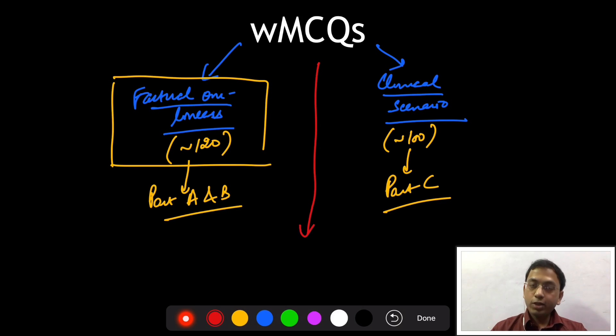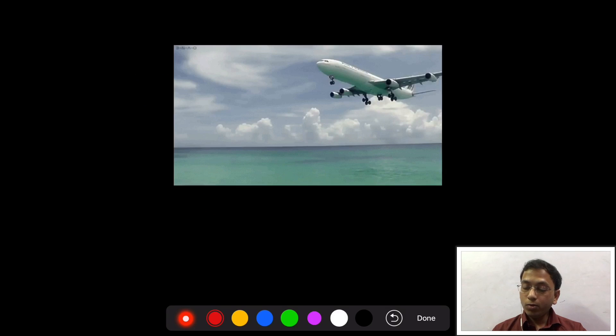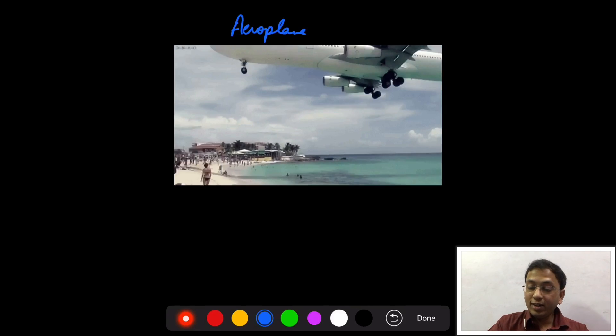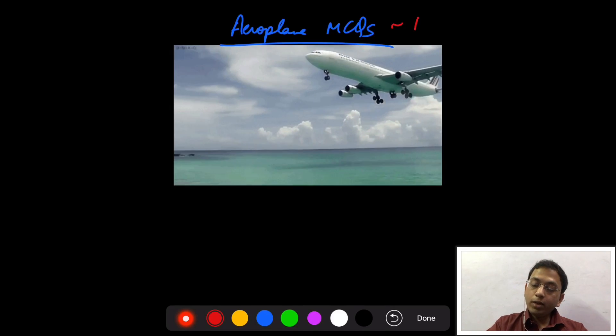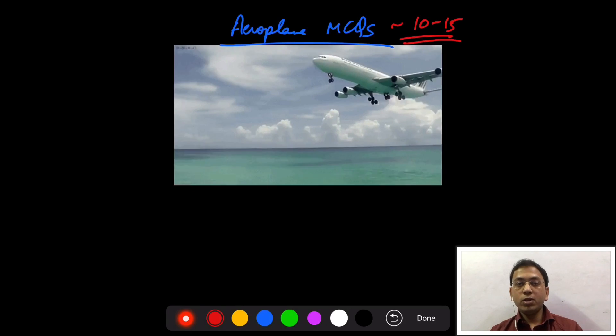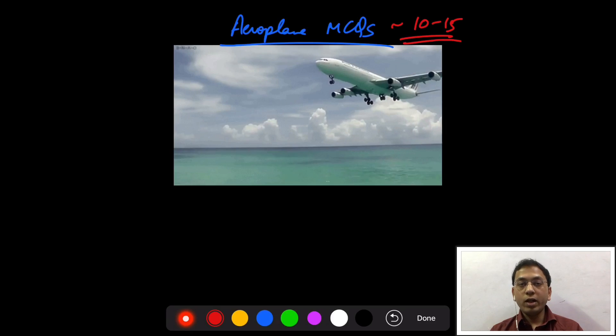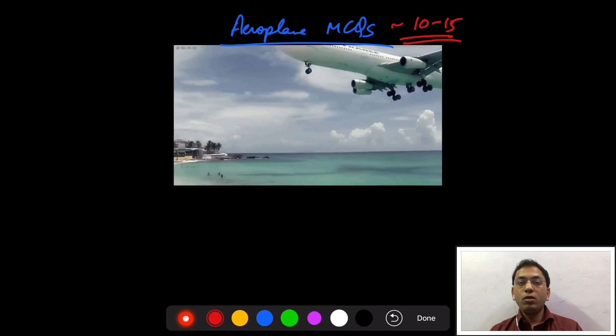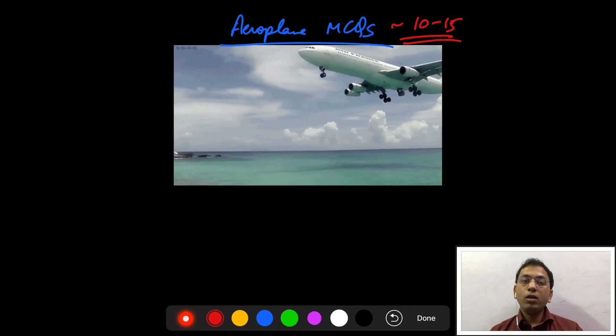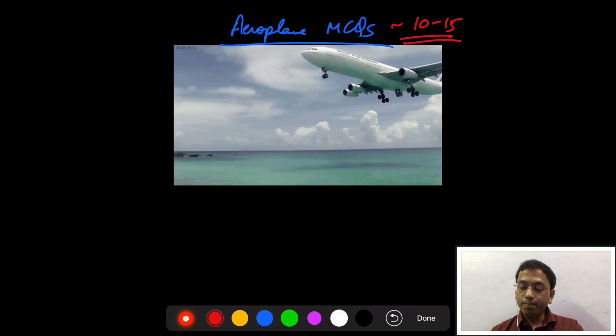Third type of questions that actually intimidate some students is what I call the aeroplane MCQs. Why I call them aeroplane MCQs is that just like this plane, they fly right over our heads. We have no idea about these MCQs. In a NEET exam, let's estimate them to be around 10 to 15 such questions. The point to note about these MCQs is they are in a minority, they are insignificant for your rank, and you must not get panicked while answering these MCQs. Do not waste too much of your time on these questions and try to concentrate on the questions that you can actually attempt.